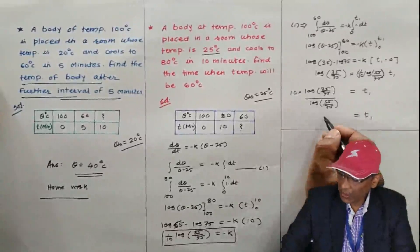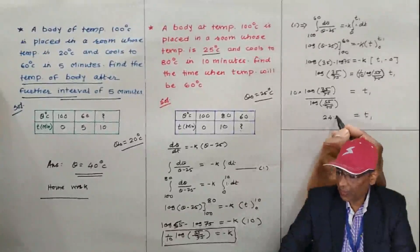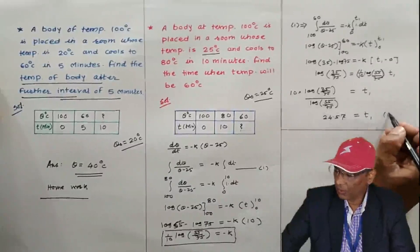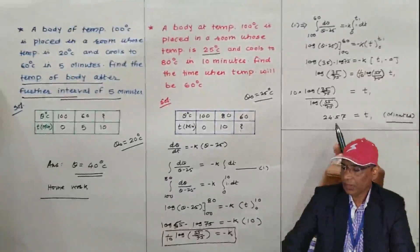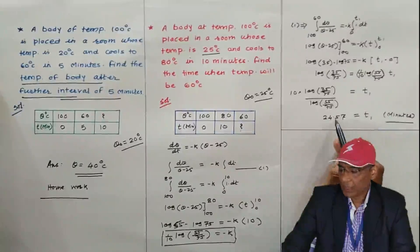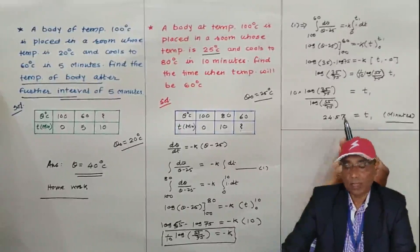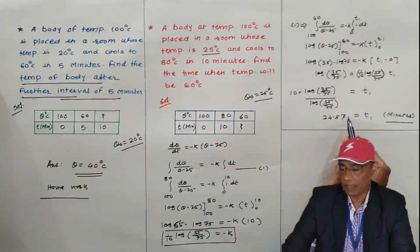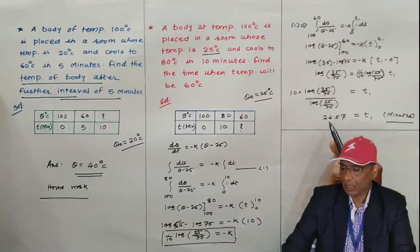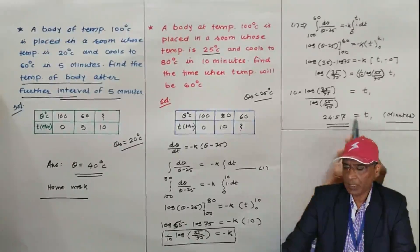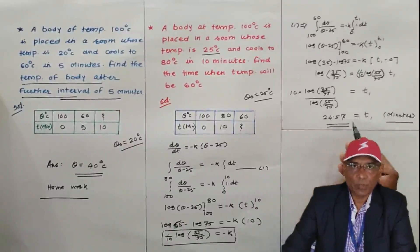The value of t₁ is 24.57 minutes. The 0.57 can be converted: since 1 minute equals 60 seconds, multiply 0.57 × 60 to get the seconds. In examination, you can leave the answer up to this point. So this is all about Newton's law of cooling. Thank you very much.